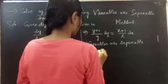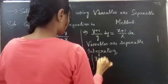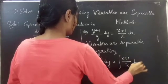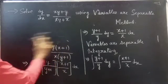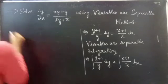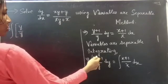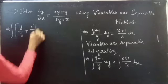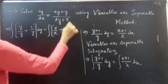Integrating on both sides: integral of (y+1)/y dy = integral of (x+1)/x dx. We are going to split each fraction into two fractions: integral of [y/y + 1/y] dy = integral of [x/x + 1/x] dx.